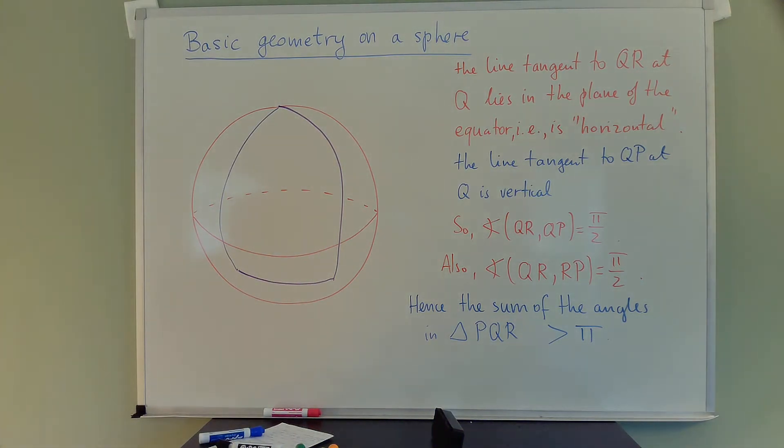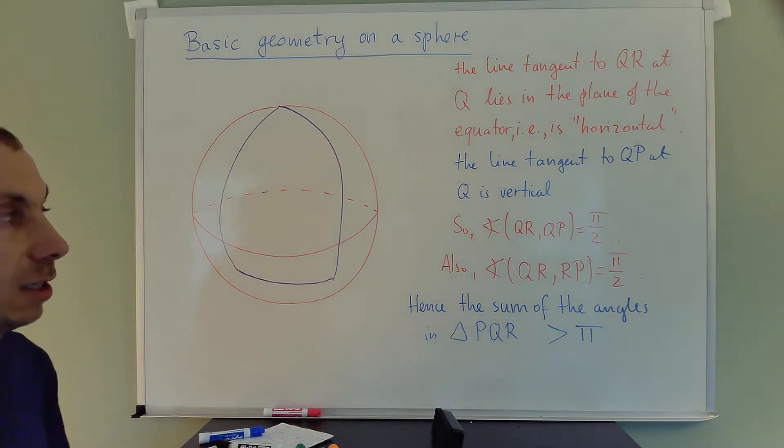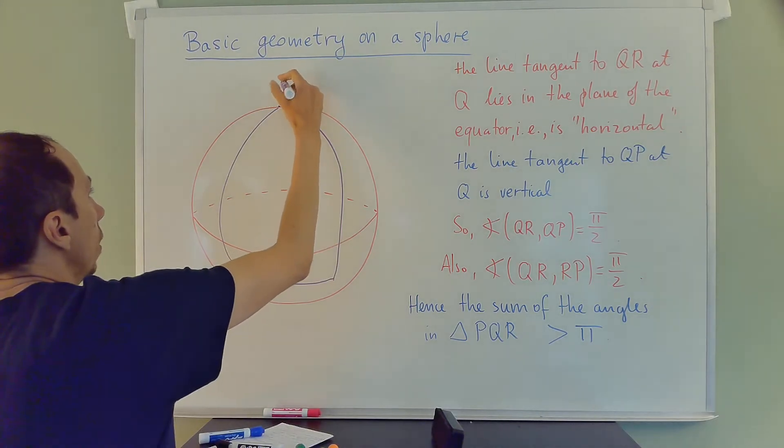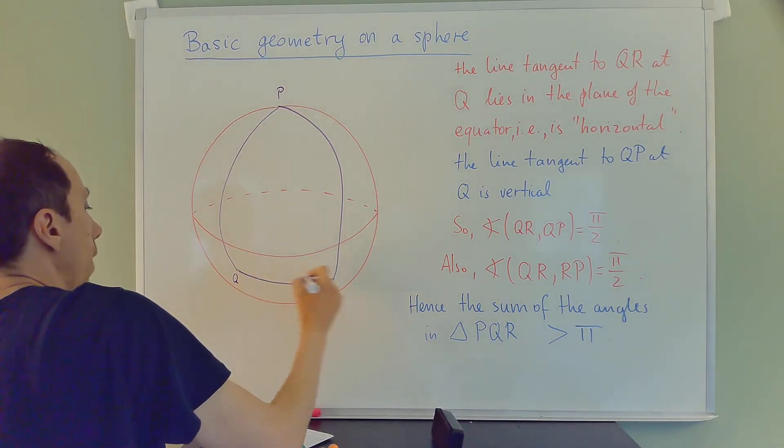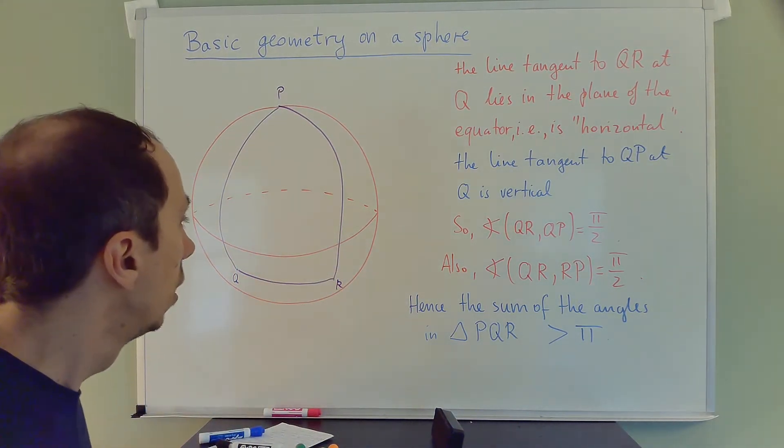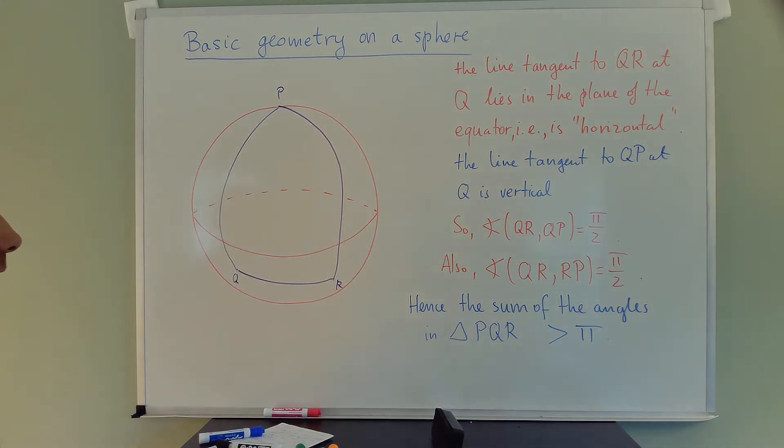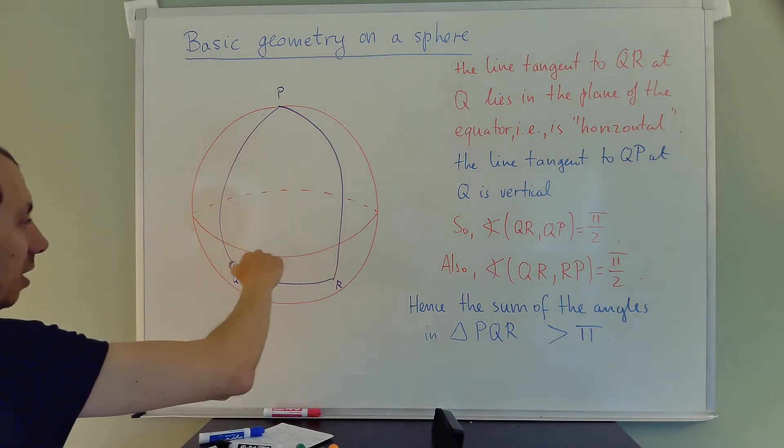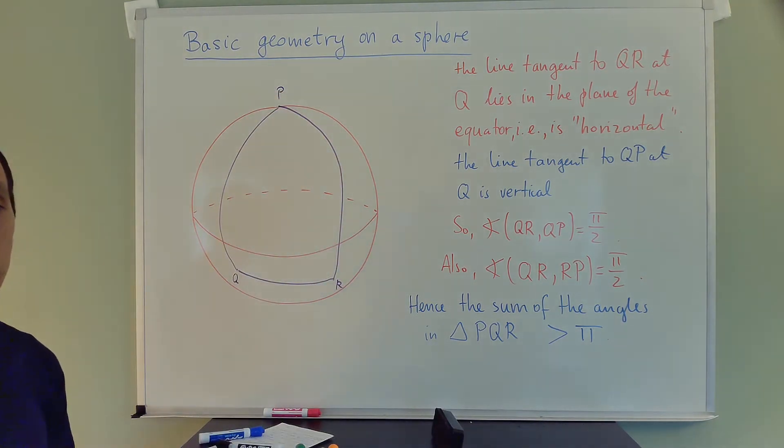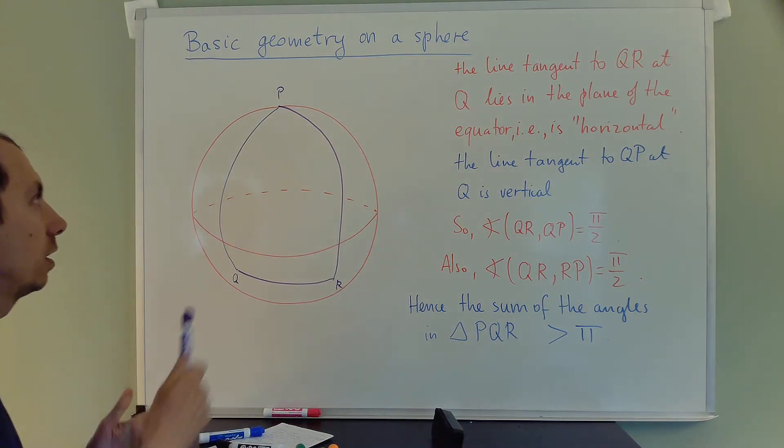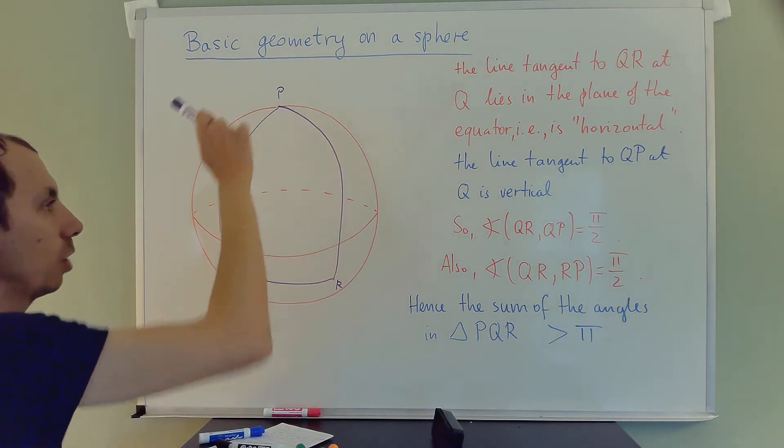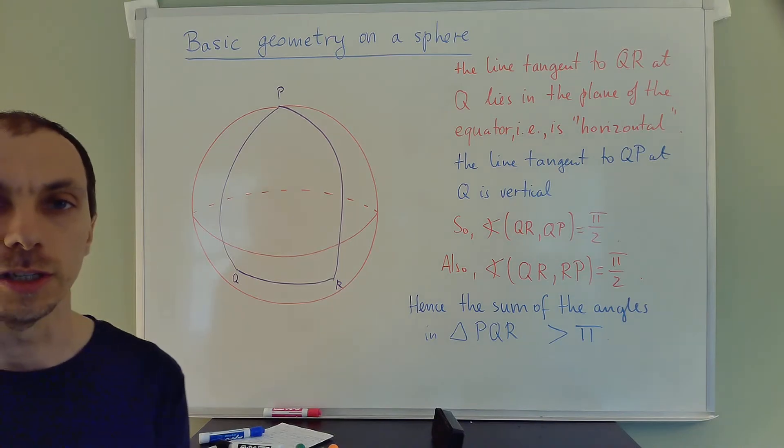Here is a triangle that connects these three points PQR. You see that now this triangle sort of doesn't look like a standard triangle you would expect, but its sides are still straight lines on the sphere—that means they are parts of great circles, so they are geodesics.